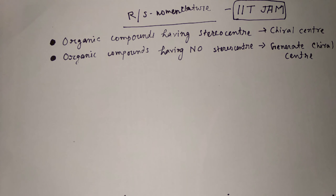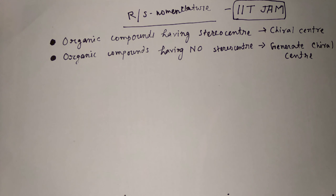I will give you examples, and by solving those examples you can solve any other questions regarding RS nomenclature. There are two types of systems for RS nomenclature. The first system is organic compounds having a stereocenter — that is, the system which has chiral centers. A chiral center is a carbon atom to which four different groups are attached. Another kind of system has no stereocenter, meaning there is no chiral center, but we still have to give R or S nomenclature, so we have to generate a chiral center.